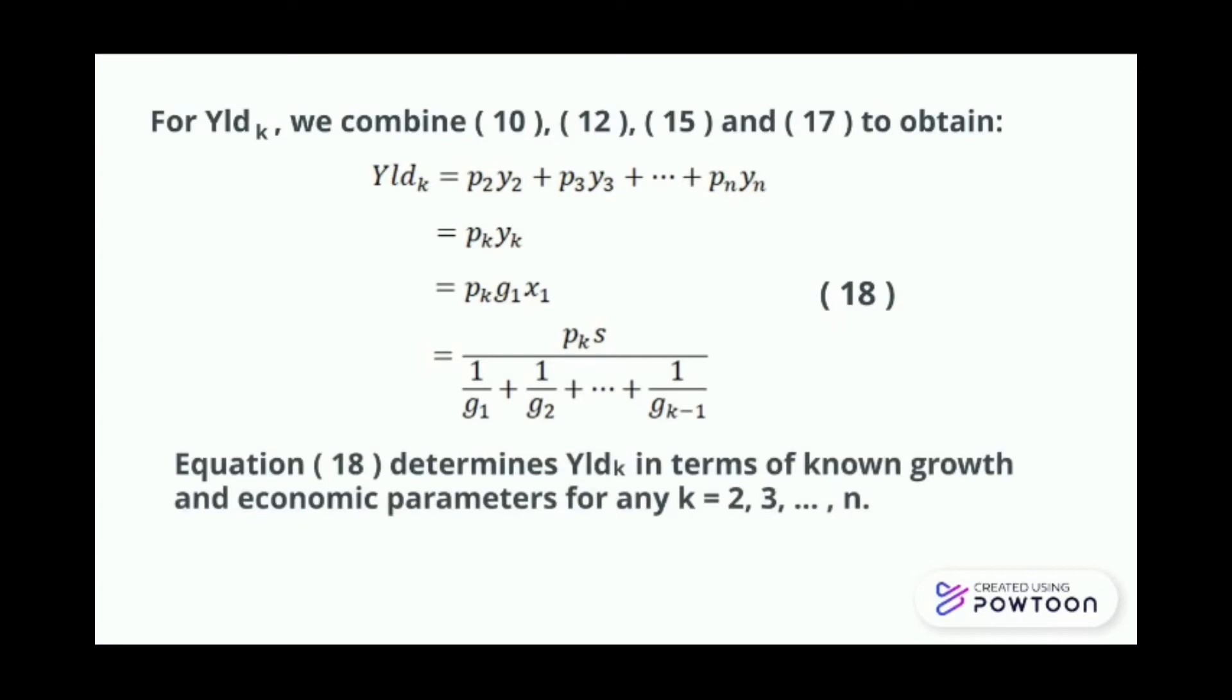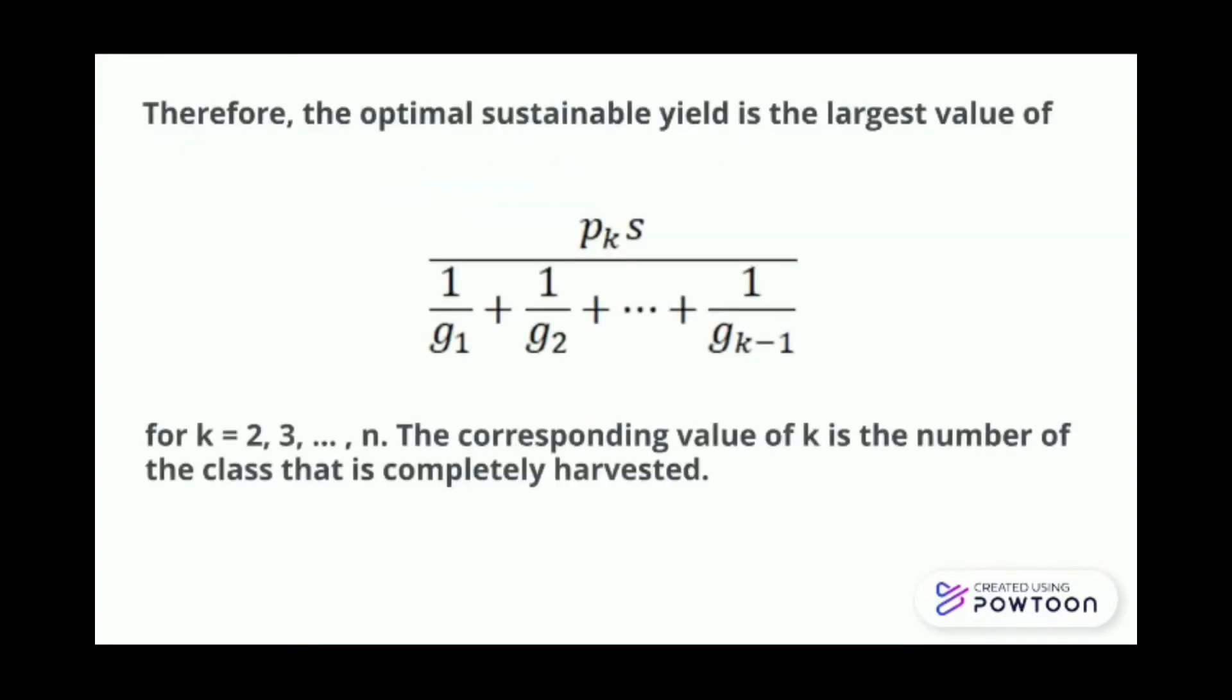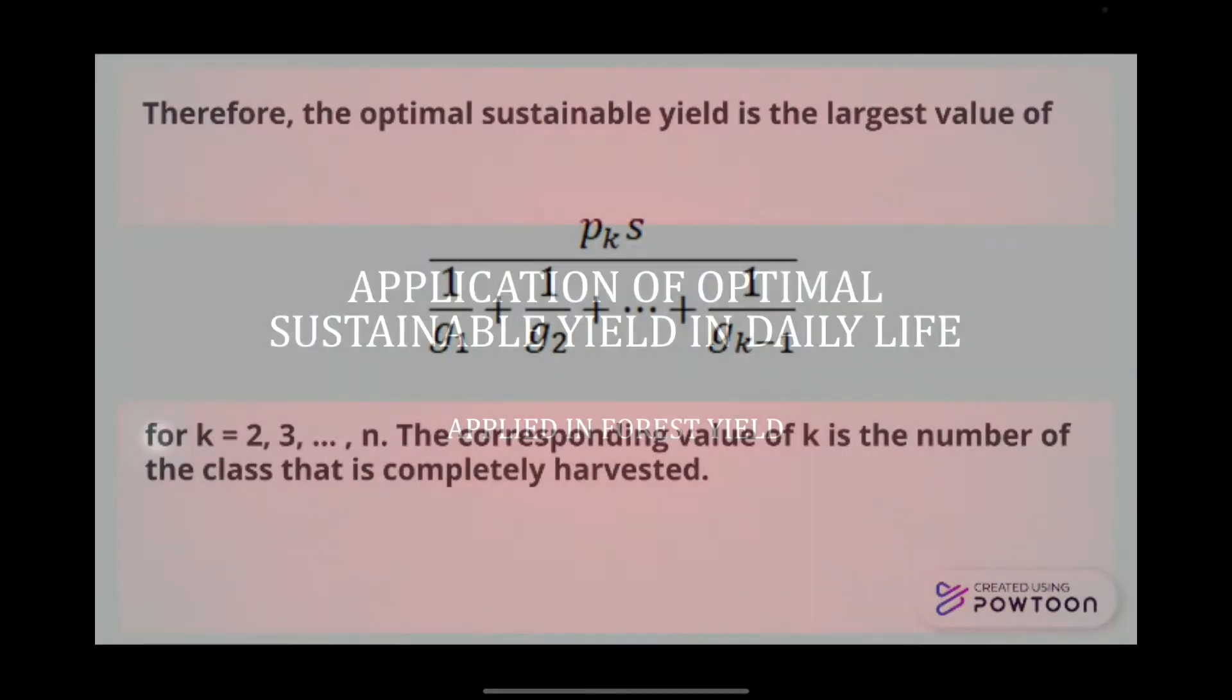Equation 18 determines the optimal sustainable yield in terms of known growth and economical parameters for any k equals to 2, 3 until n. Therefore, the optimal sustainable yield is the largest value of k equals to 2, 3 until n. The corresponding value of k is the number of the class that is completely harvested.